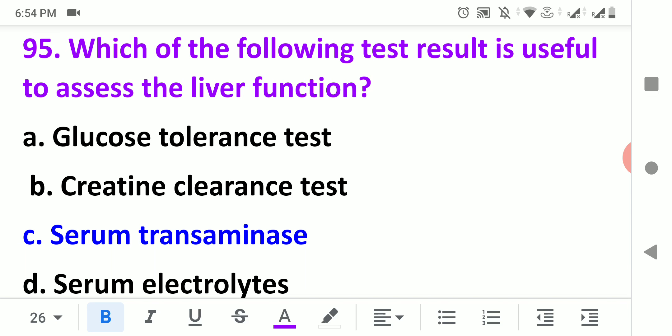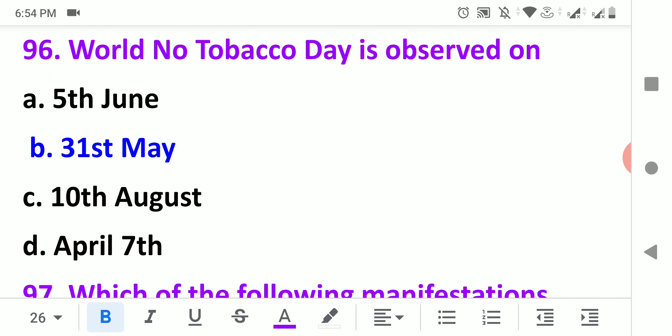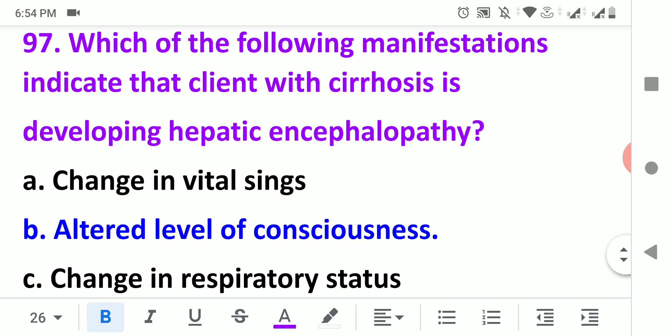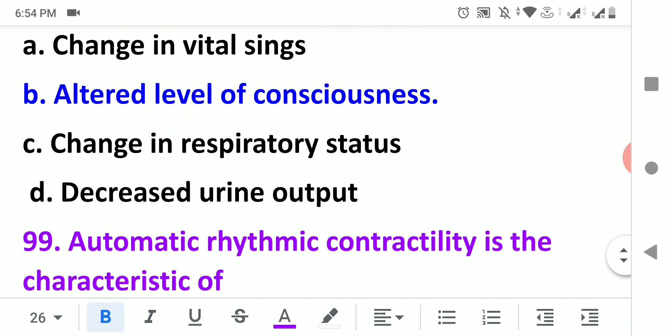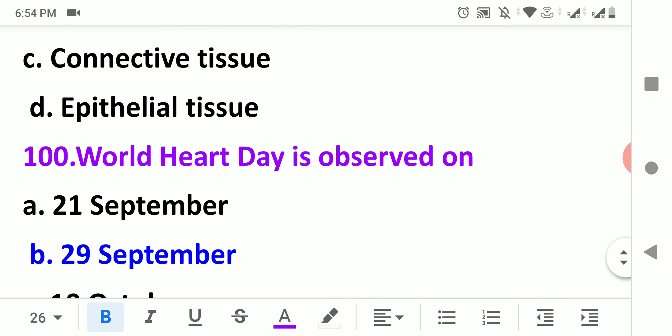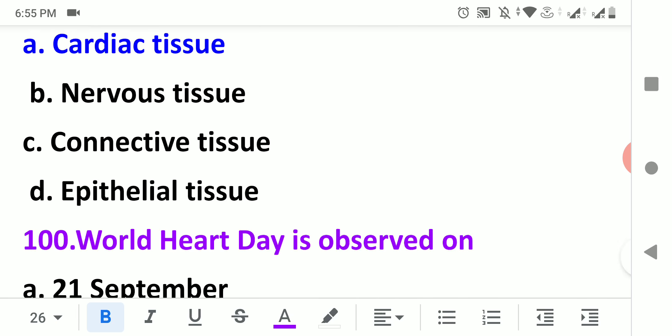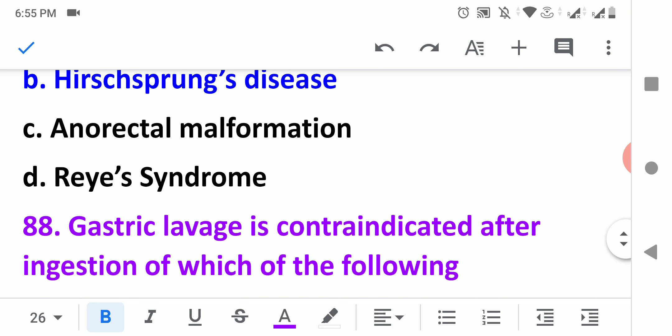Which of the following test results is useful to assess the liver function? Serum transaminase test results assess liver function. World No Tobacco Day is observed on 31st May of every year. Which of the following manifestations indicates that the client with cirrhosis is developing hepatic encephalopathy? Altered level of consciousness indicates hepatic encephalopathy.